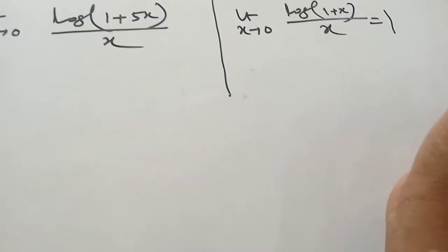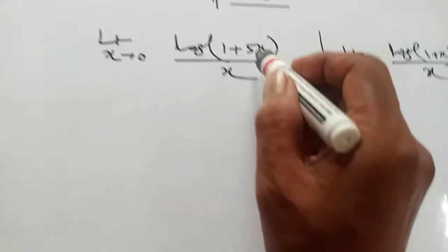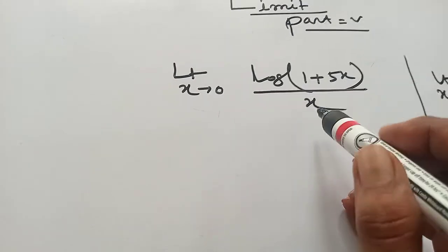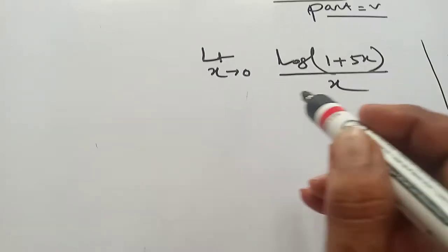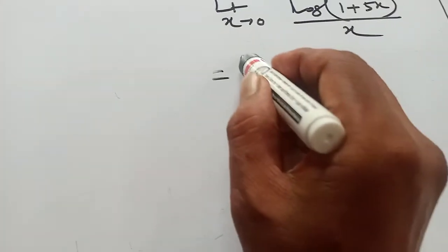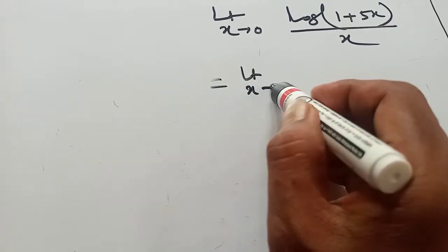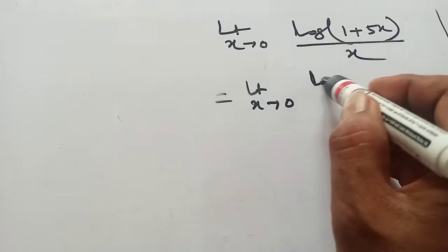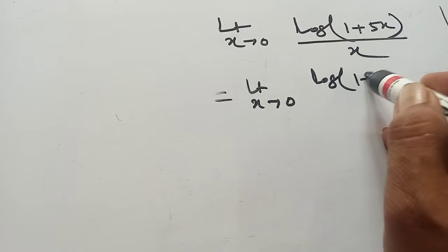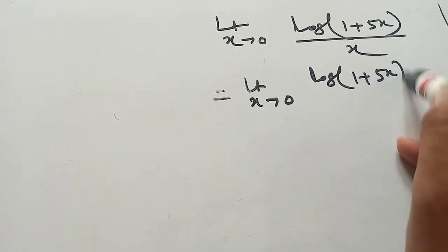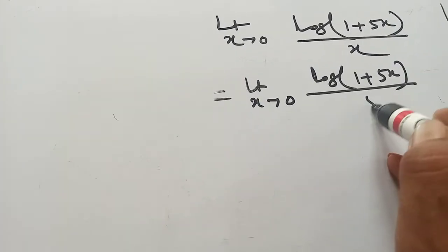But in this sum, here is 5x given, but here is required x. Now you can adjust it. Limit as x tends to 0, log(1 plus 5x) by - you write here 5x.